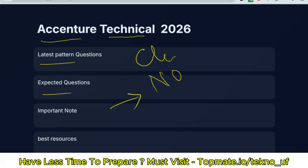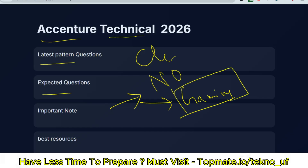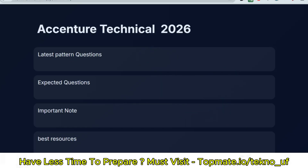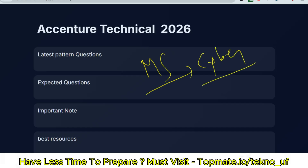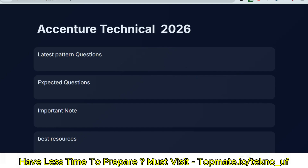There is no cognitive assessment as before. Now only gaming rounds are available in cognitive ability, and then the technical assessment will be held. In the technical assessment, there will be pseudo code questions, cloud and networking questions, MS Office questions, cyber security questions, and some DBMS-related MCQ questions.